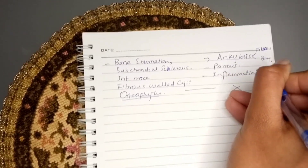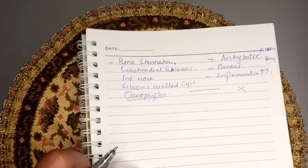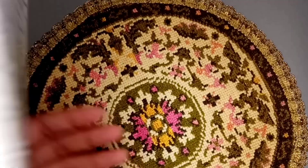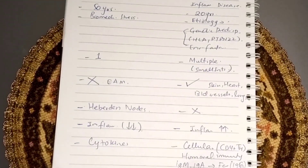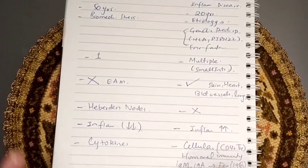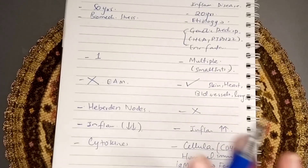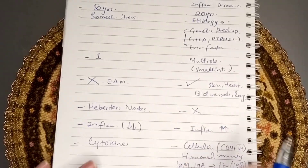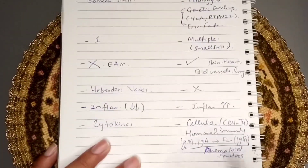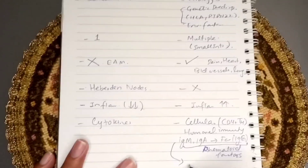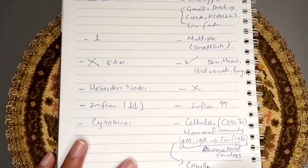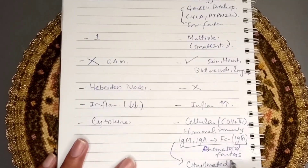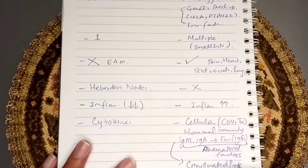One more point: in rheumatoid arthritis, the antibodies formed respond against citrullinated proteins — so they act against the citrullinated proteins.